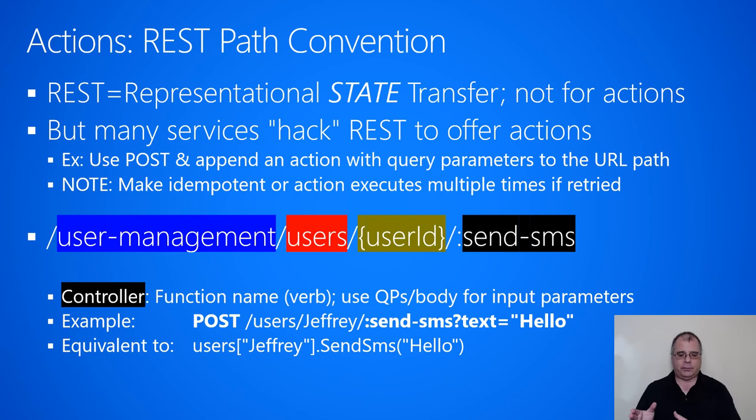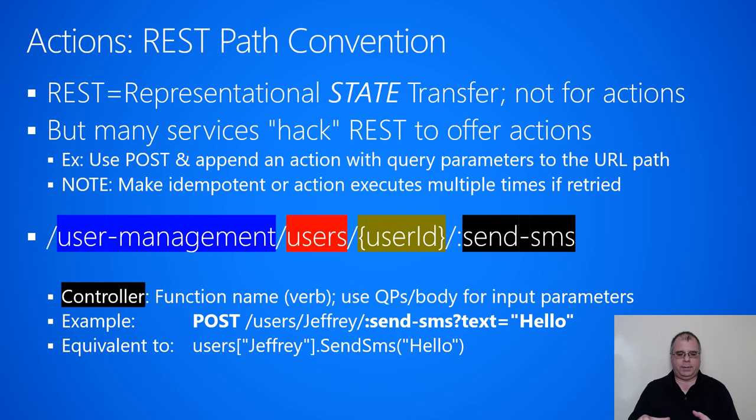For the query parameters, I'm saying the text of the SMS message should be the string 'hello'. In some programming languages, it's logically the equivalent of going to the users collection, looking up the Jeffrey entity within that collection, and then calling a method on it like send SMS, where the text argument is passed the value 'hello'. That's logically the equivalent, and this is the pattern we recommend using for performing actions on resources.